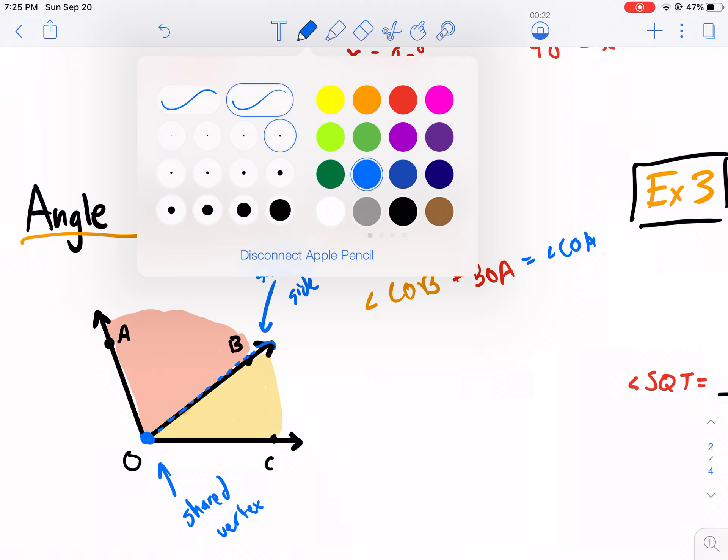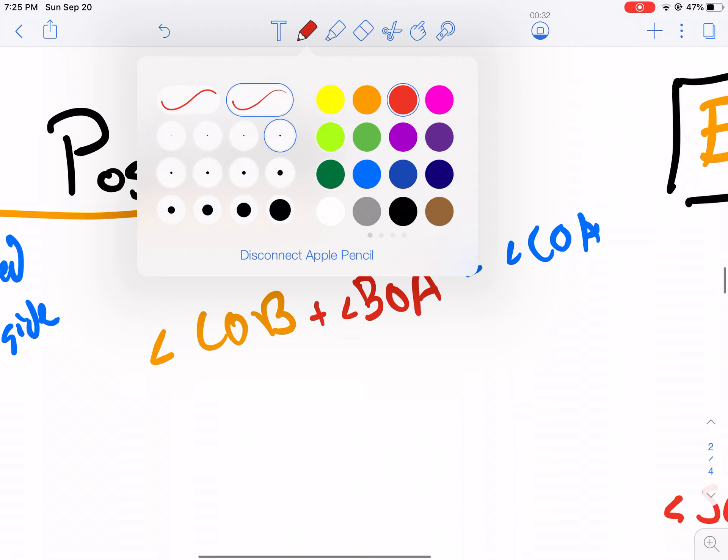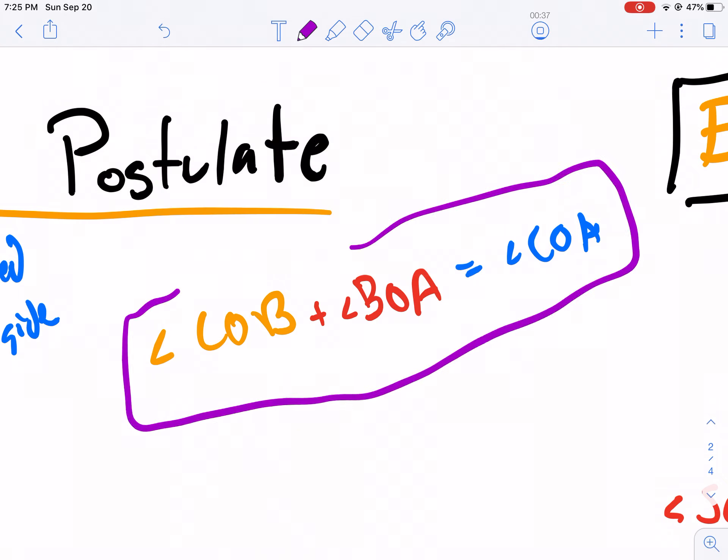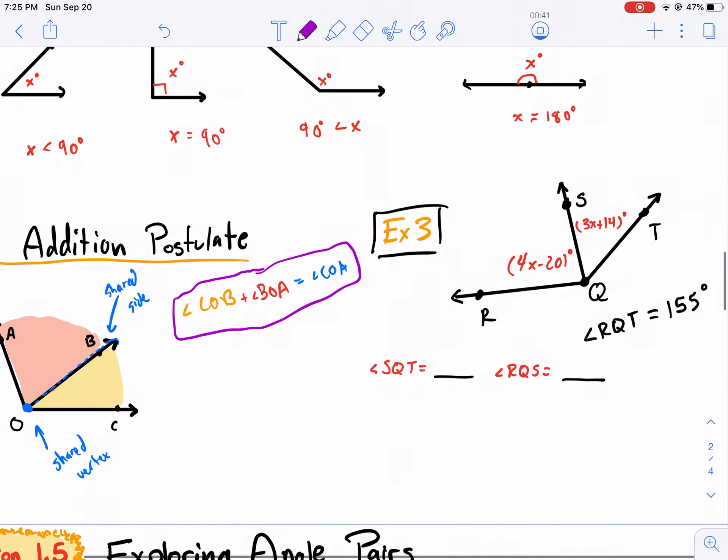And I forgot the angle. It's actually pretty important that you call this angle BOA. Otherwise, it could be a plane. You'd never know what that could be. So this is essentially the segment addition postulate. Oh sorry, angle addition postulate. Same principle, just applied to angles.